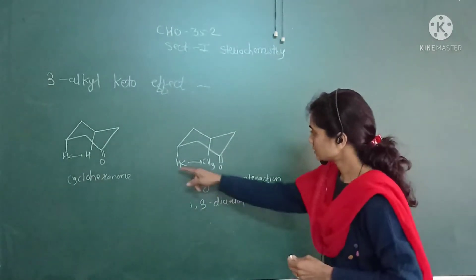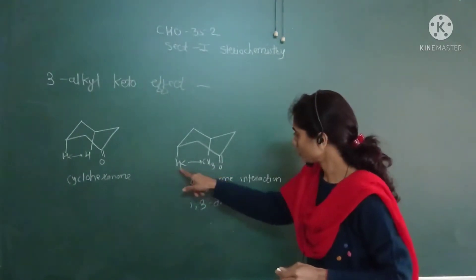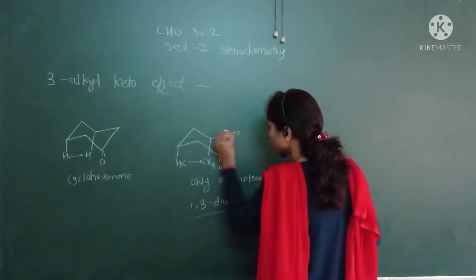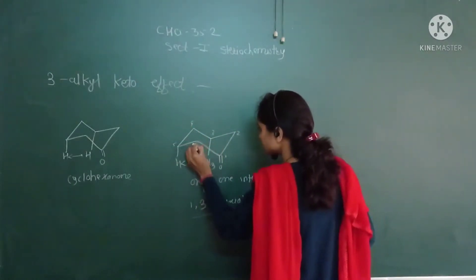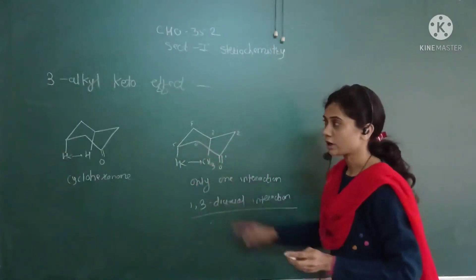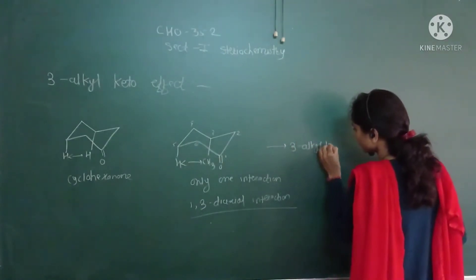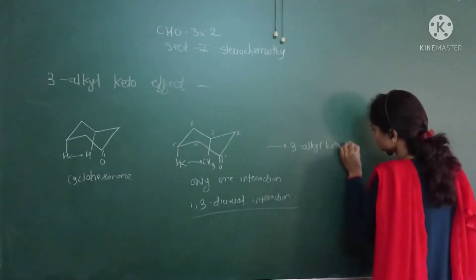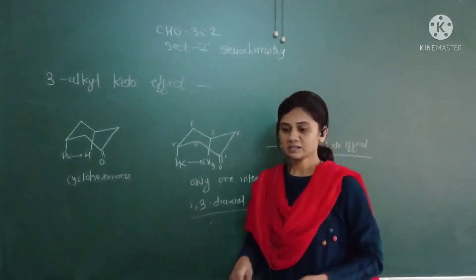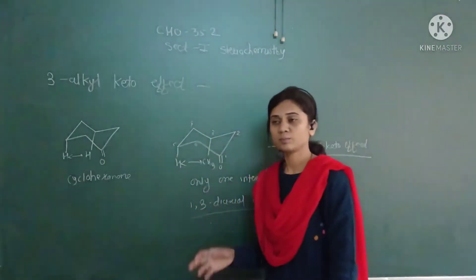This is a one-three diaxial interaction. There is only one interaction between CH3 and hydrogen in this 1,3-diaxial interaction — positions one, two, three, four, five, six. This is called the three-alkyl keto effect.